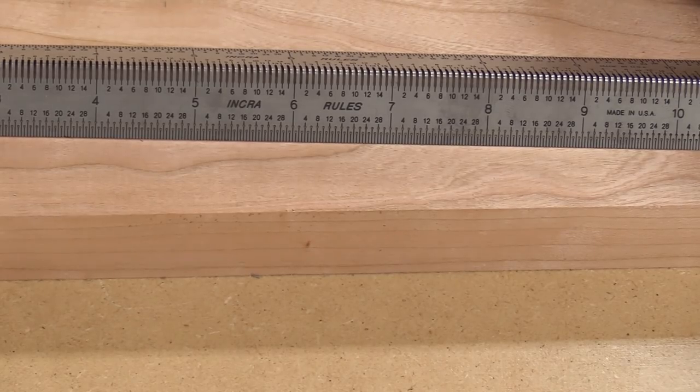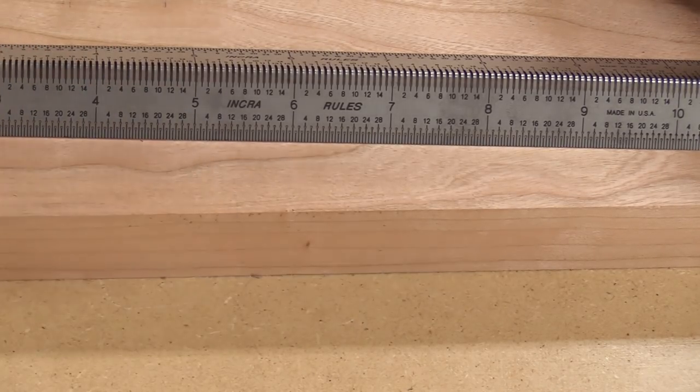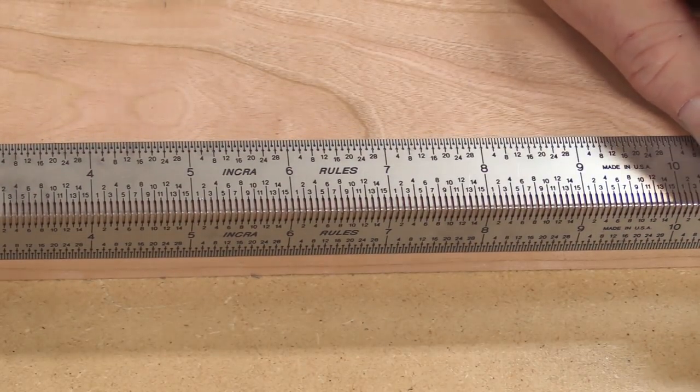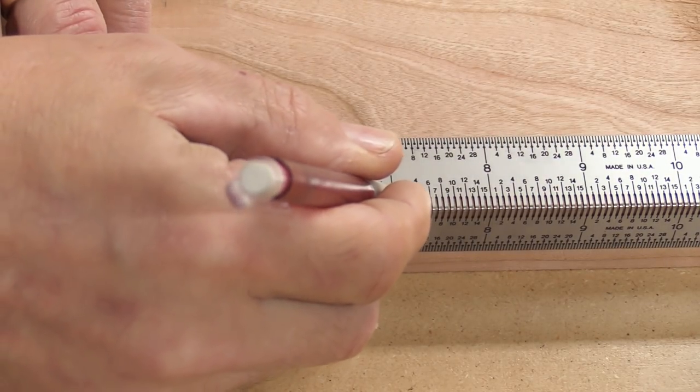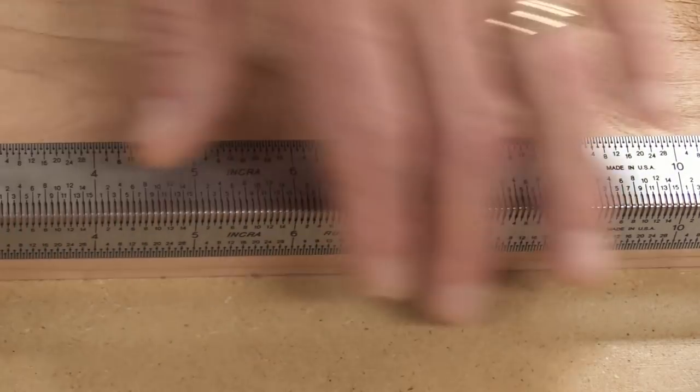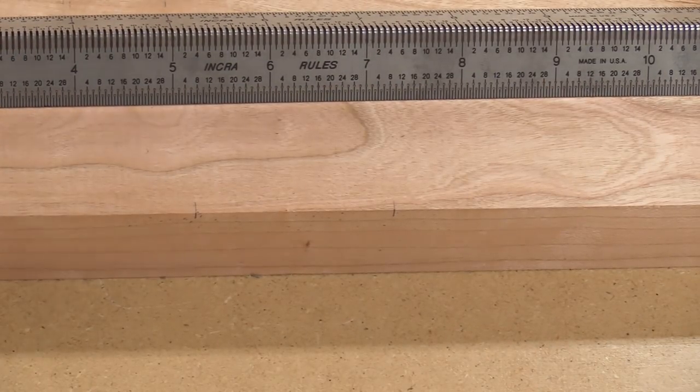Now this tool is incredibly useful when you need to make marks on adjacent faces of boards. I can just drop this down, let's say I need to make a mark at 5 inches here, and 7 inches here. No guesswork, very accurate.